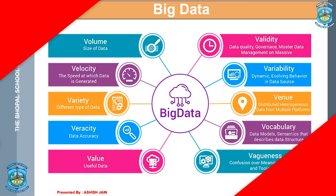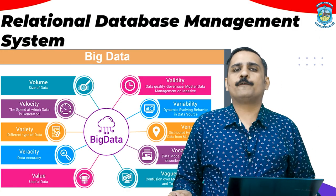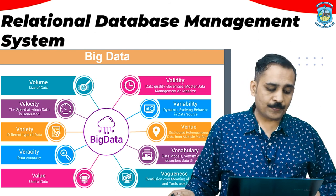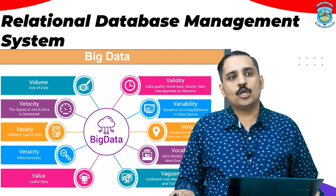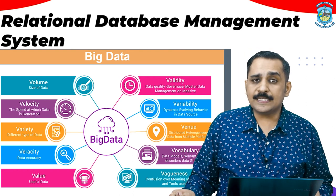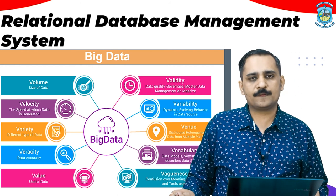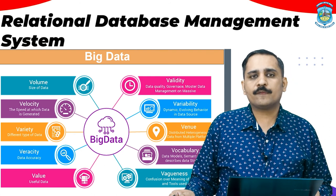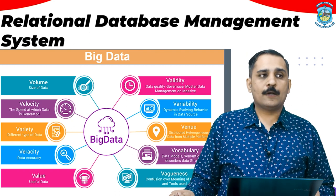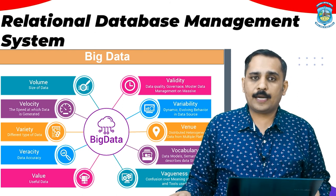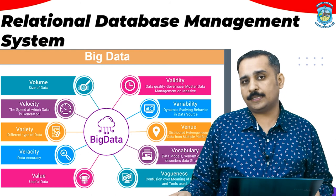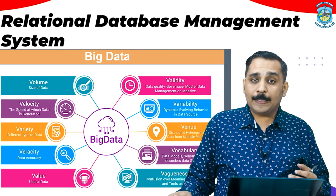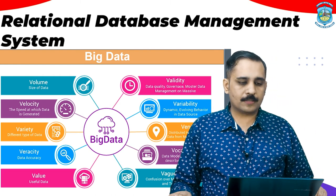Let us see them one by one. We begin with volume — the size of data. Big data comprises very large amounts of data generated, stored, and processed. Then we have velocity — the speed at which data is generating. There are a lot of advances in sensor technologies, and the kind of transactions in e-commerce mean that millions of transactions happen in a fraction of seconds, generating a lot of data. For example, in terms of WhatsApp, audio, social media like Facebook, Instagram, and Twitter analysis — so much information is generated and to be analyzed in a very short time. The speed at which this data is generated is very large — this is called velocity.